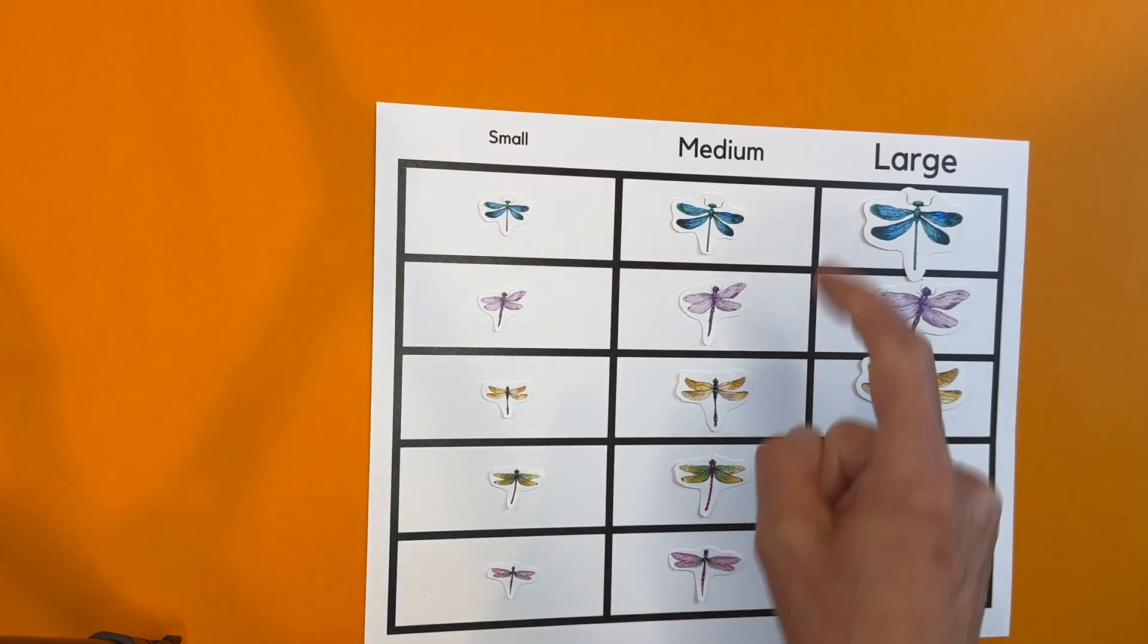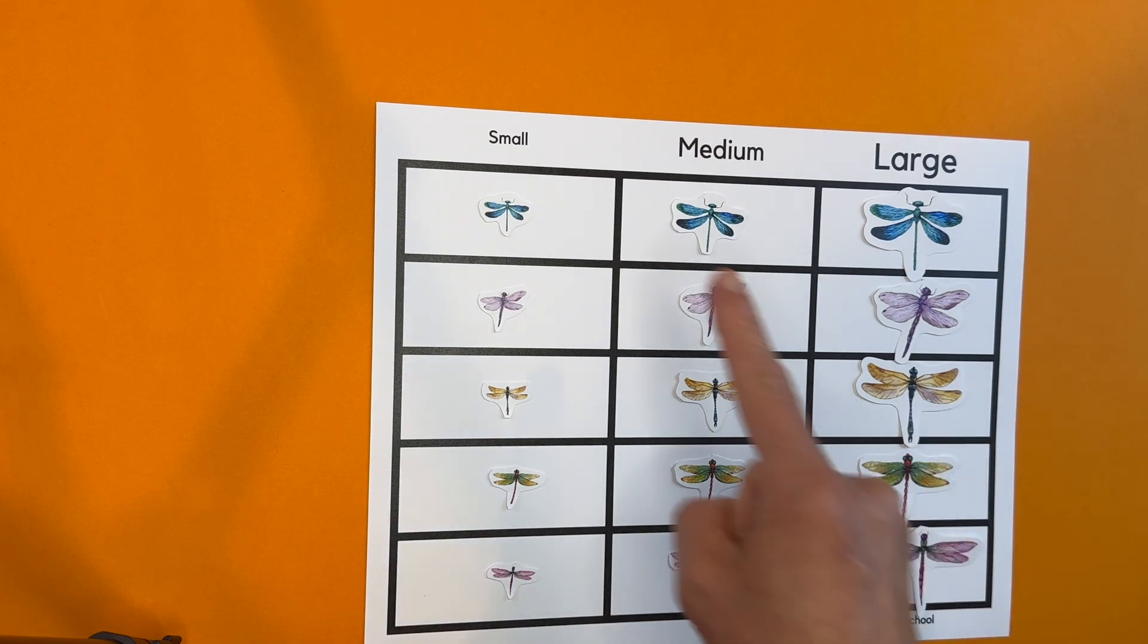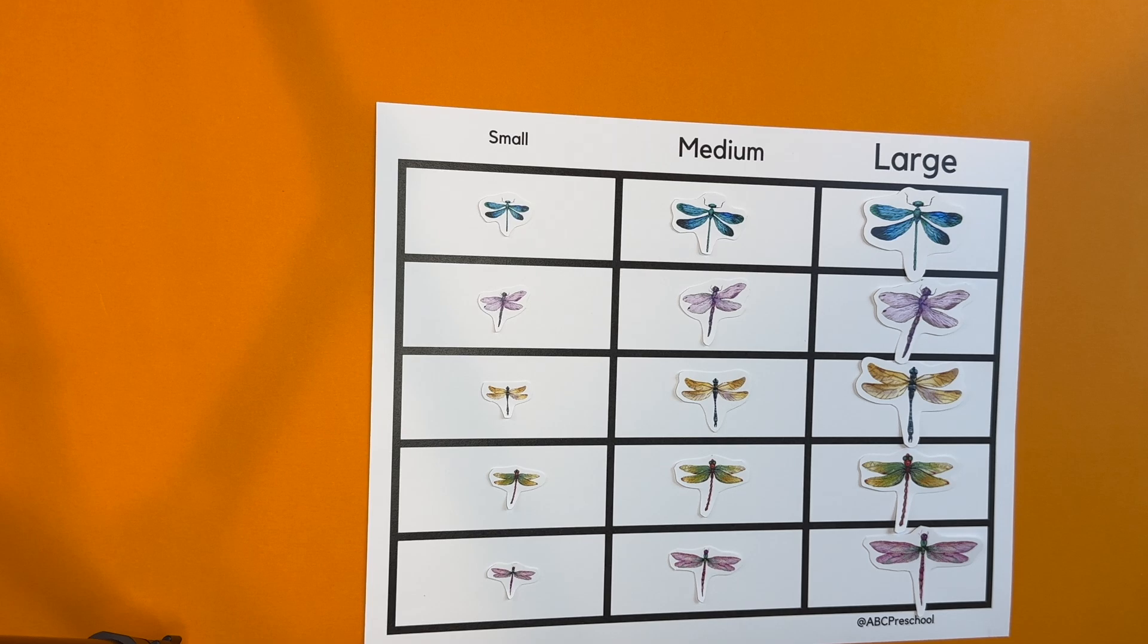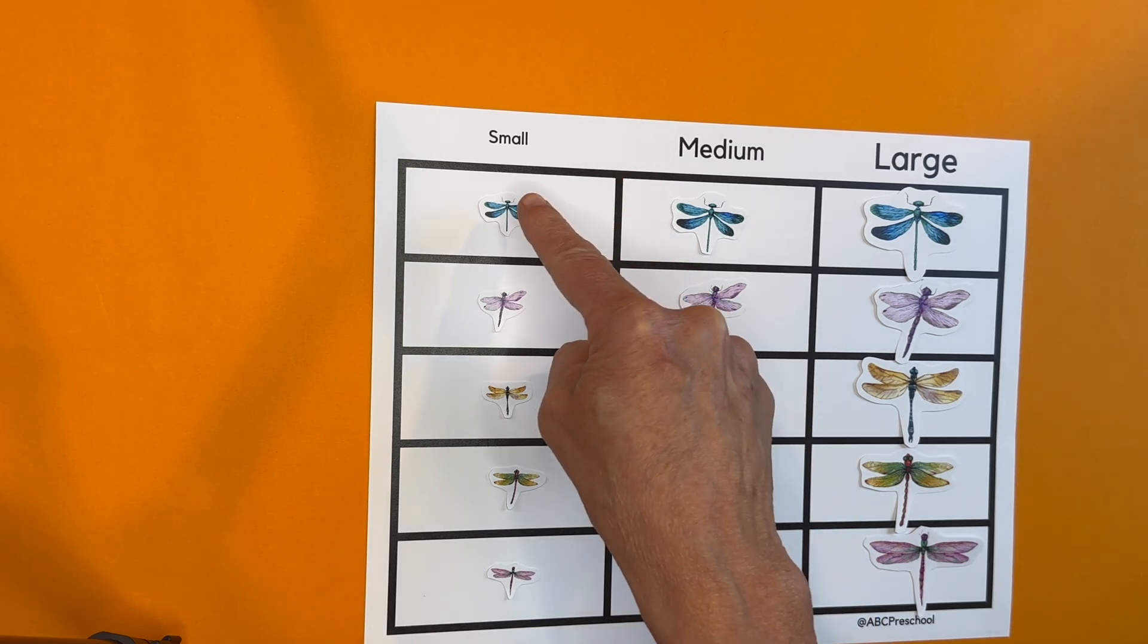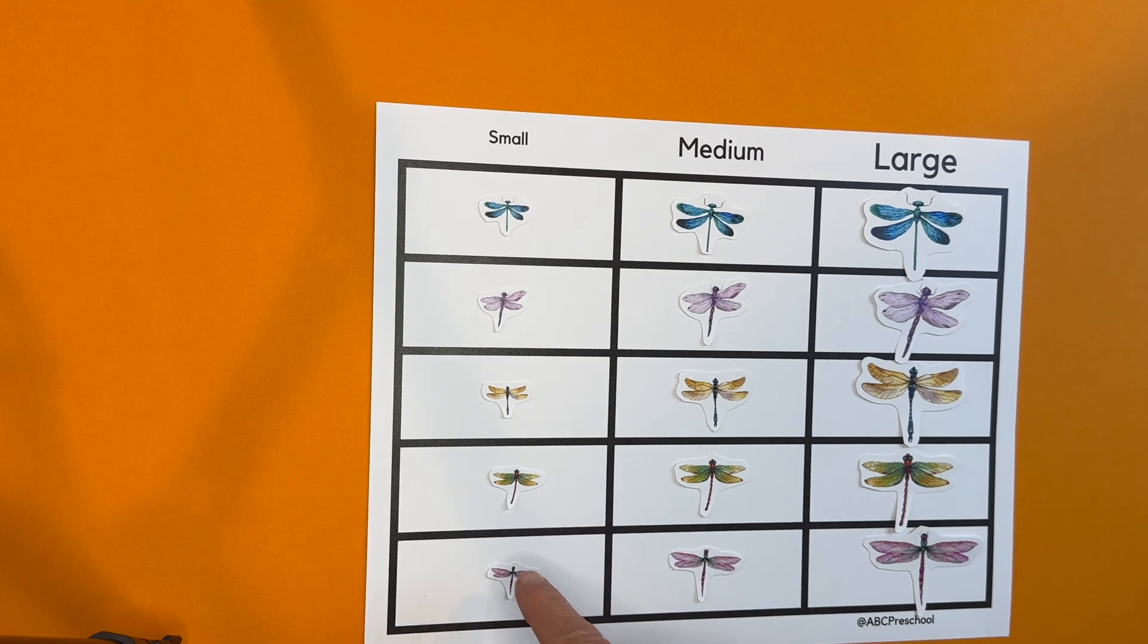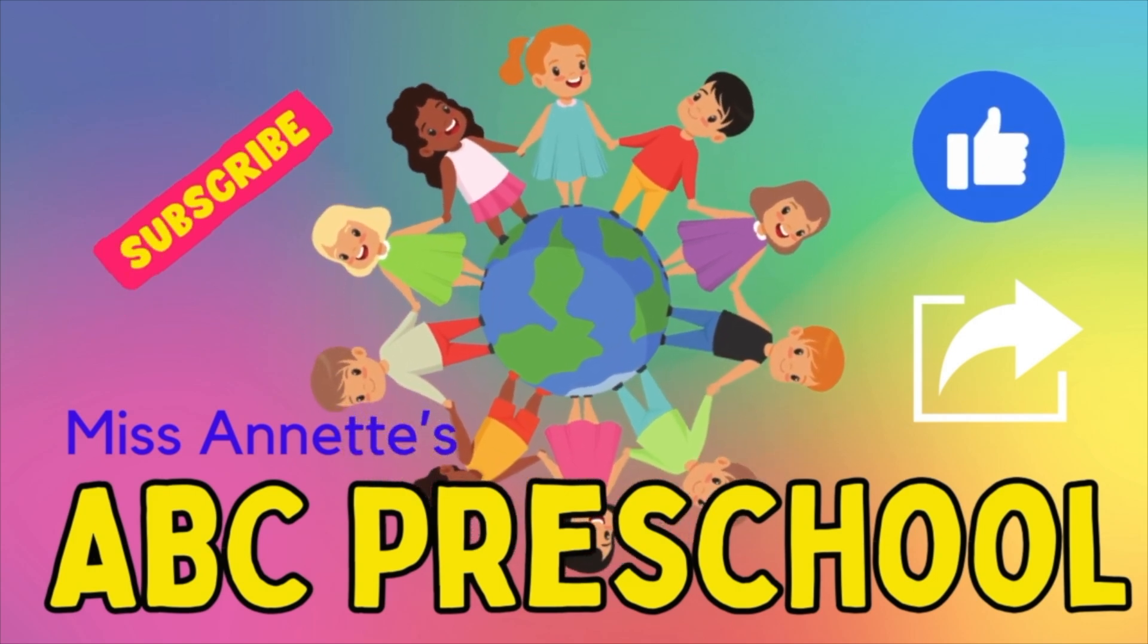All the small ones, the medium ones, and the large ones. There are one, two, three in each family. And let's count how many families there are. One, two, three, four, and five. Well done. One, two, three, four, and five.